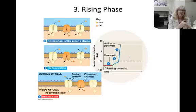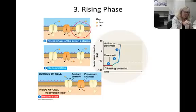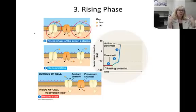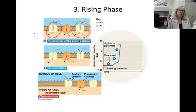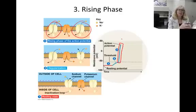A strong trigger opens all the sodium channels in an area. This causes a large rush of sodium into the cell, and the membrane becomes very positive inside compared to the outside, producing this large depolarization spike.